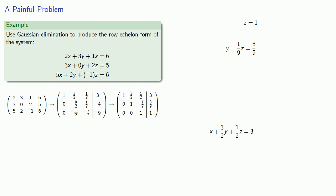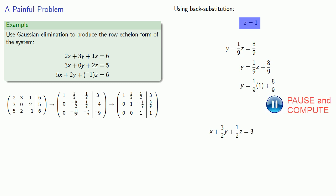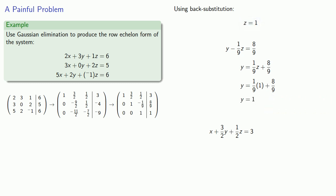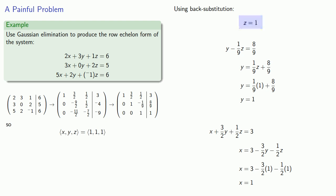Now we solve through back substitution. Starting with the last equation: z = 1. For the next equation, y - (1/9)z = 8/9 — substituting z = 1, we find y = 1. For the first equation, substituting y and z and solving for x, we get x = 1. So our solution is x = 1, y = 1, z = 1, or as a vector (1, 1, 1).